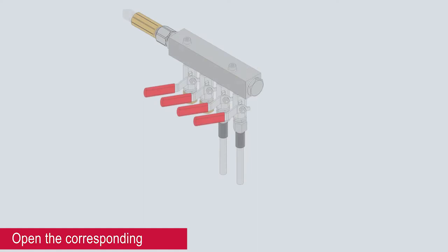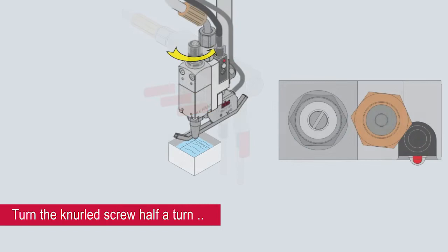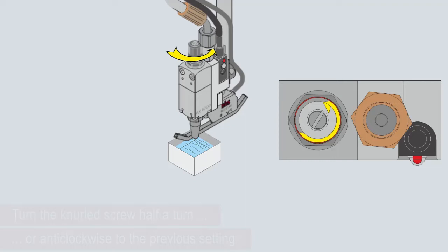Turn the knurled screw half a turn or anti-clockwise to the previous setting. Press the rinse button until adhesive escapes without air bubbles.